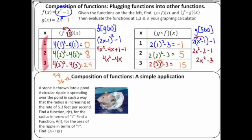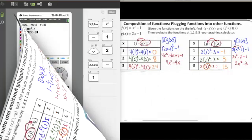As a rule of thumb for both of these: you always take the inner function and plug it into the outer function, simplify it down, and then plug your values in. That's how you do composition. Next we'll take a look at a stone-in-a-pond example.